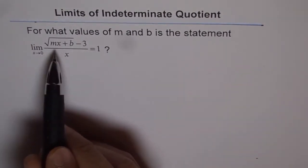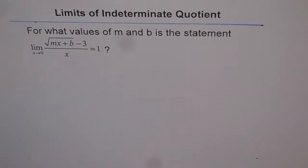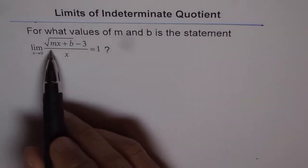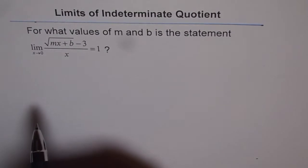That is, limit of this function, square root of mx plus b minus 3 over x, is equal to 1. Now we need to find the values of m and b so that we get limit of this function as 1.